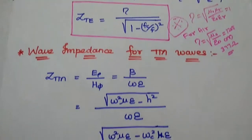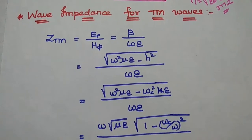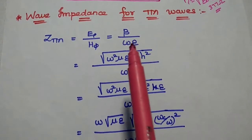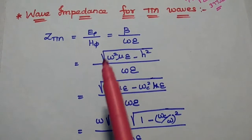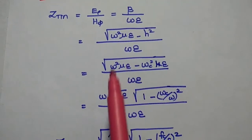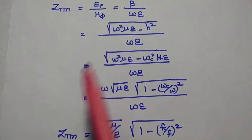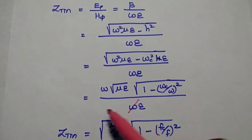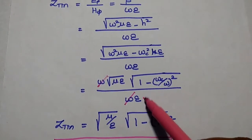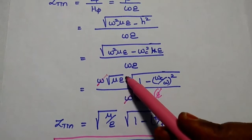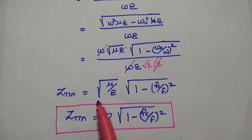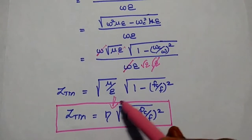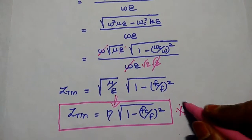Similarly, we can derive the wave impedance for TM waves. For transverse magnetic waves, the relation between the electric field and magnetic field is given as beta by omega epsilon. Substituting the phase shift constant in the numerator and using H squared equal to omega_c squared mu epsilon, we take omega squared mu epsilon outside the square bracket. It becomes omega times the square root of mu epsilon times the square root of 1 minus (omega_c by omega) squared. After simplification, Z_TM equals the square root of mu by epsilon multiplied by the square root of 1 minus (f_c by f) squared, which is eta times that square root factor.